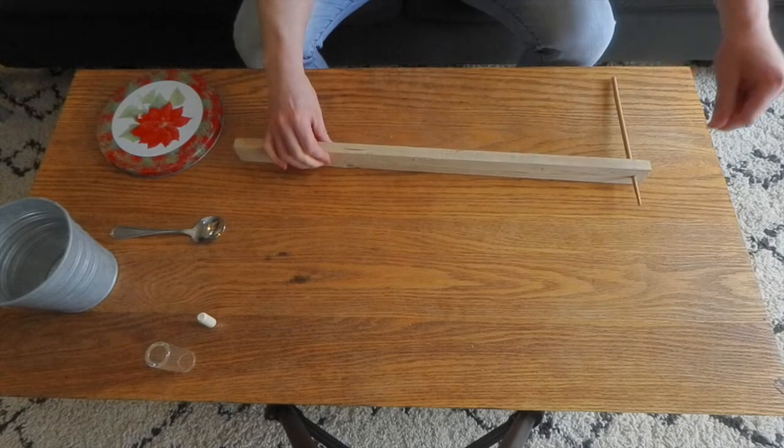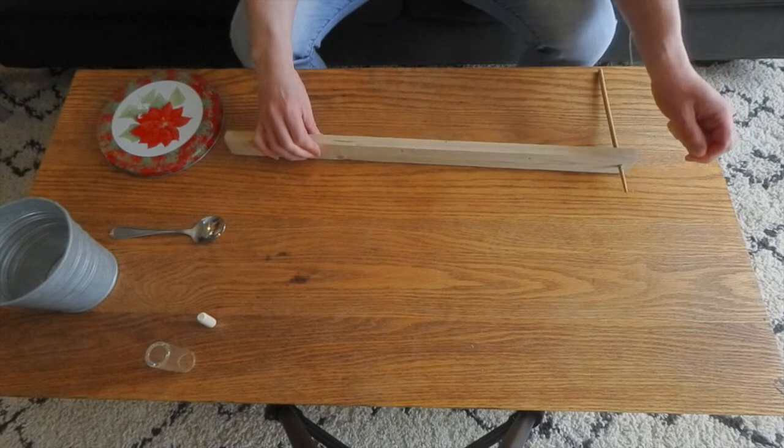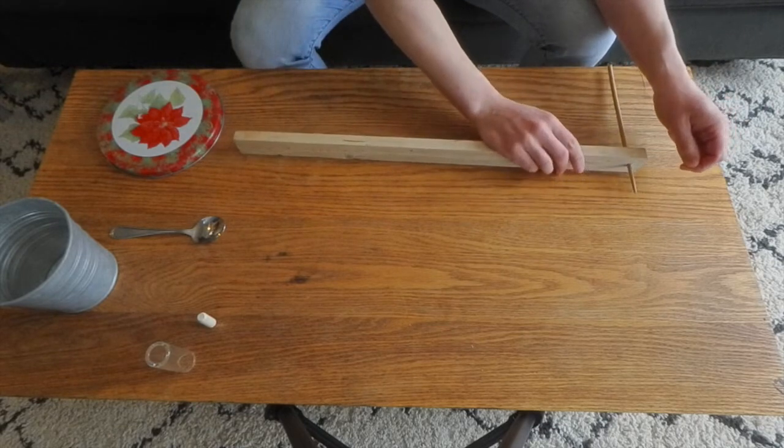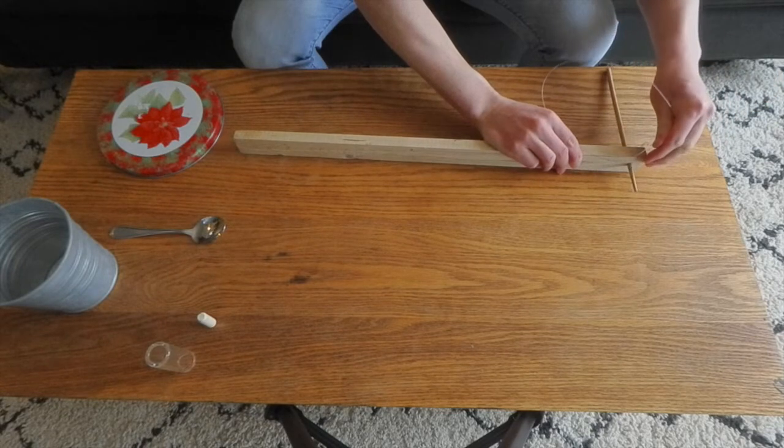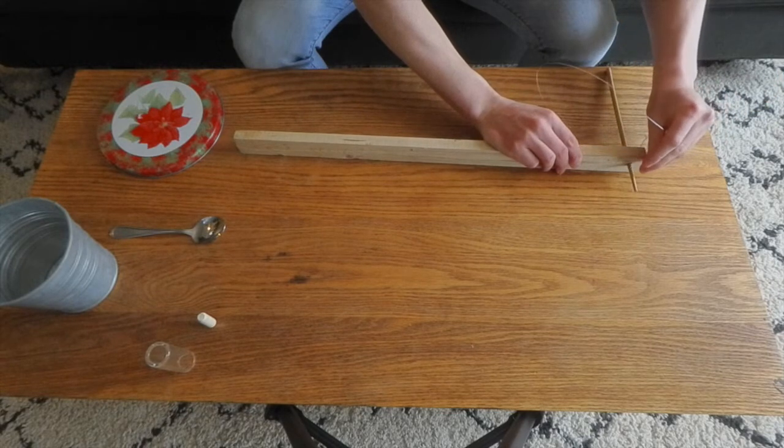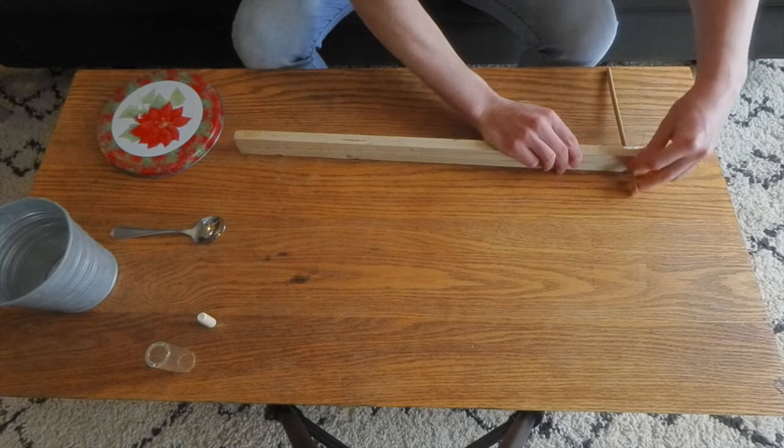Now I've looped this around the nail, and I'm going to take the other end of the string and put it through the pre-drilled hole in the chopstick. Then I'm going to pull it all the way through.